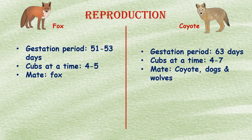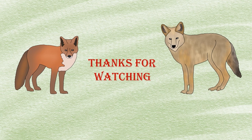The gestation time of a fox is 51 to 53 days, and they give birth to four to five cubs at a time; they only mate with partners in the same genus. The gestation time of a coyote is about 63 days, and they give birth to four to seven cubs at a time. Coyotes can also mate with dogs and wolves — if a coyote mates with a wolf or dog, the offspring are called coywolves and coydogs.